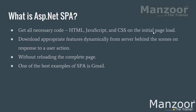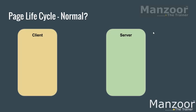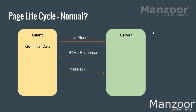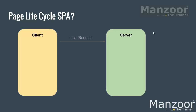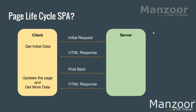Let us understand the same thing with a visual diagram. In the normal page lifecycle, you have a server and a client. The client sends a request, the server sends a response, and you see a complete page reload at the client. For a postback, the server sends the response and the complete page gets reloaded again. But the SPA page lifecycle is different. The client sends an initial request, gets the response with all the initial data. For the next postback, the server sends the response and it updates the client side — it is not going to reload the complete page.